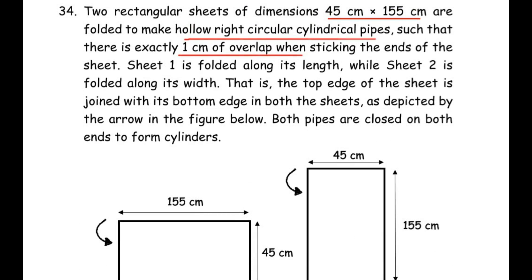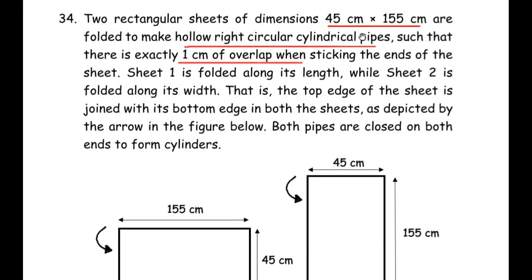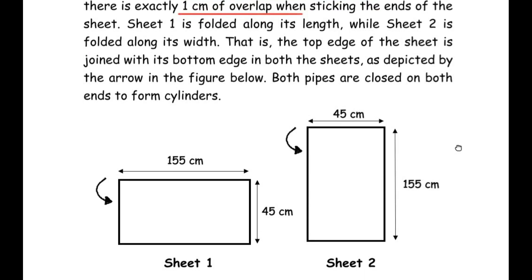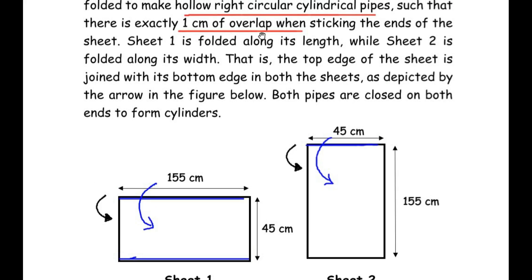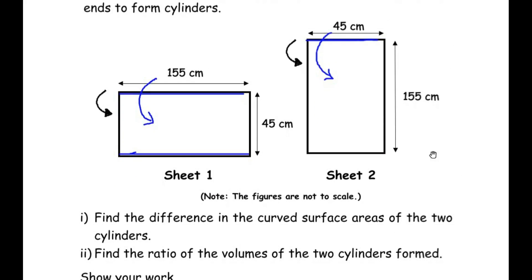They have given two rectangular sheets that are identical — same dimensions 45cm × 155cm — only the orientation is different. We are going to fold it so that the top end of the rectangle comes and touches the bottom end of the sheet, rolling it as shown. The same is repeated with sheet 2: the top edge is rolled so it touches the bottom edge. There is also an overlap of 1cm when rolling the sheets. We have to find the difference between the curved surface areas of the two cylinders.